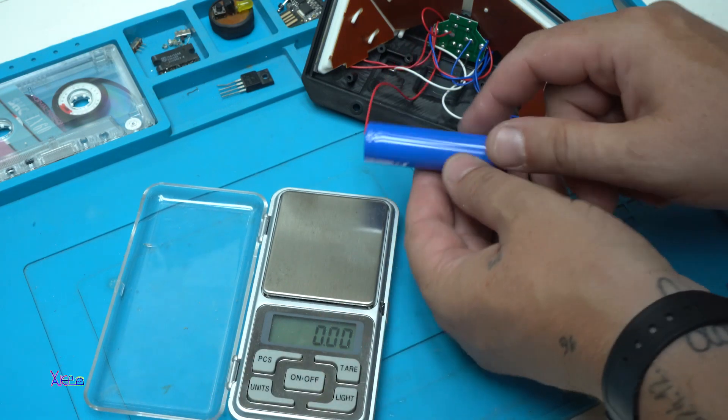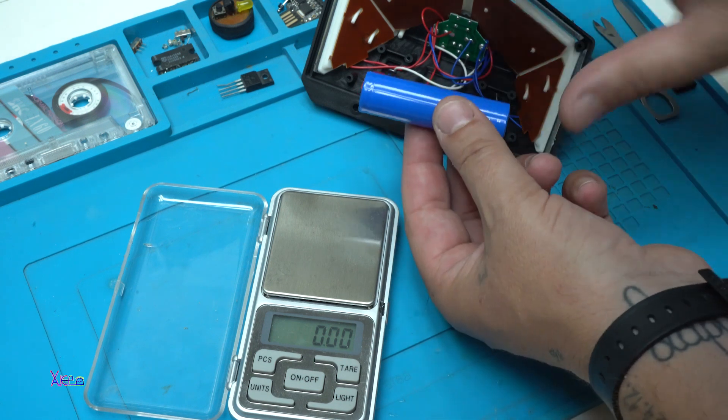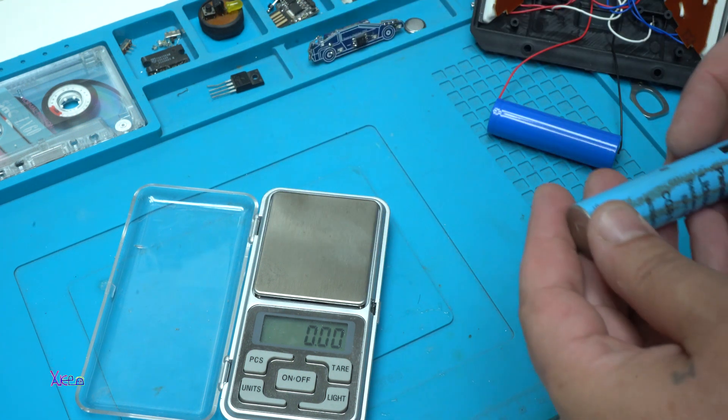It weighs only 23 grams. Wow. Just to compare, this original Panasonic 18650 battery weighs 43 grams.